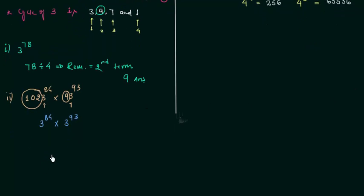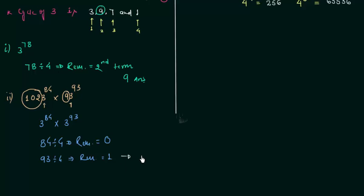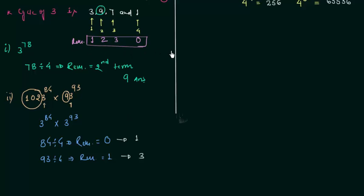Dividing 84 by 4 gives a remainder of 0, and dividing 93 by 4 gives a remainder of 1. When remainder is 1, the first term of the cycle applies; when remainder is 2, select 9; when remainder is 3, select 7; and when remainder is 0, select the last term, which is 1. So depending on the remainder, we select one digit out of 3, 9, 7, and 1.